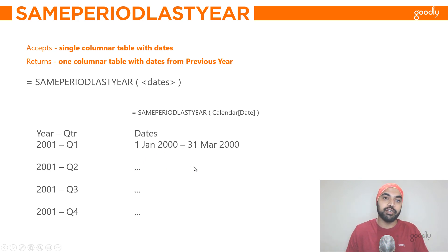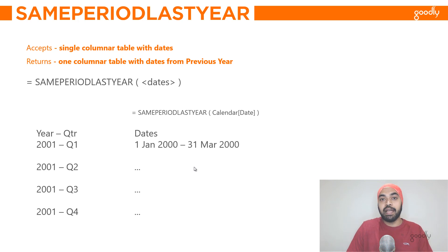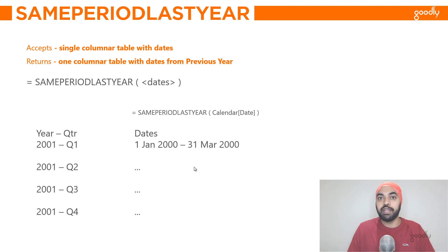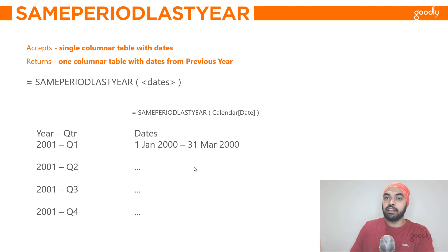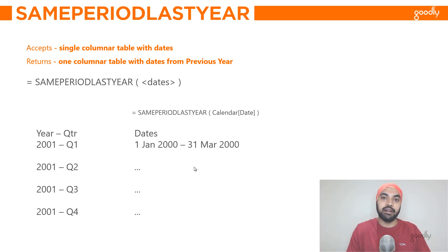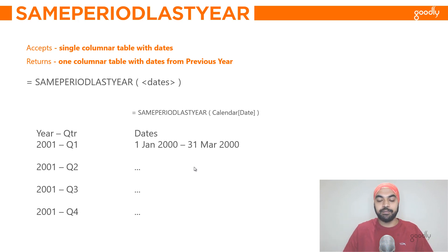Obviously, this is not a valid measure — this will give you an error, because SAMEPERIODLASTYEAR gives you a table as an output with just one column of dates from the last year. So we'd have to work around with the table to make sure we are actually running a single value output and not the table as an output. This would give us an error. Let's hop over to Power BI and take a look at how the SAMEPERIODLASTYEAR function actually works.